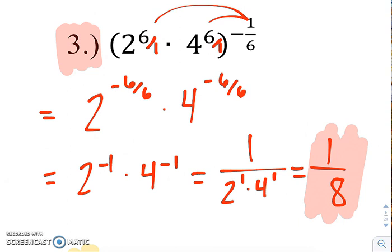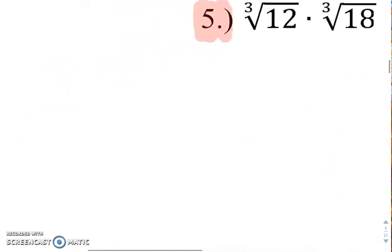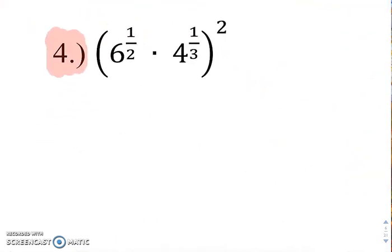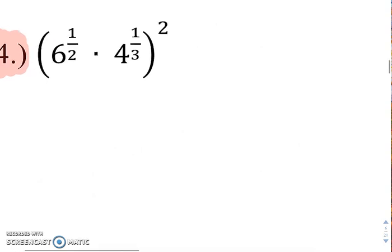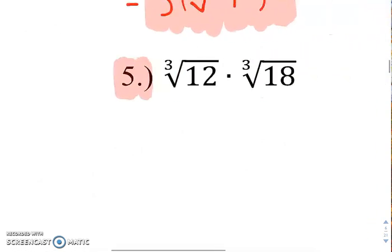So in simplest form, when there's no perfect roots underneath the radical, no exponents that are negative, no exponents that are fractions.